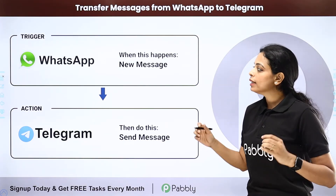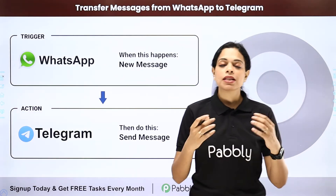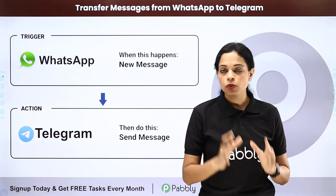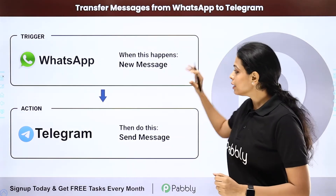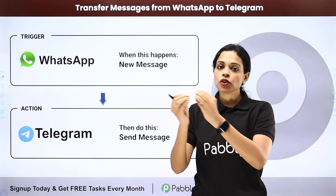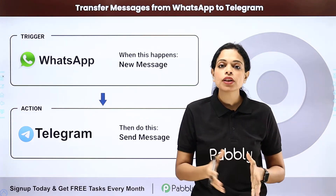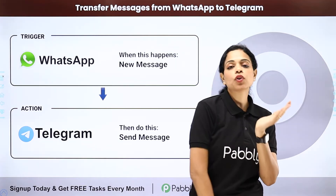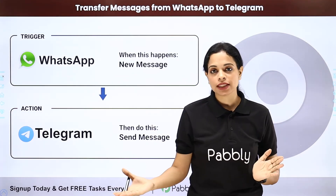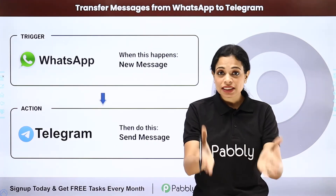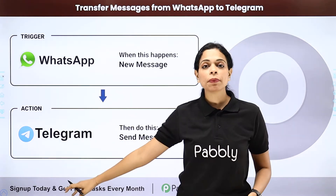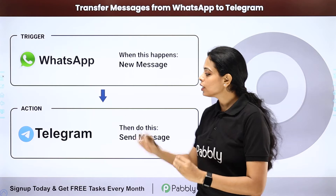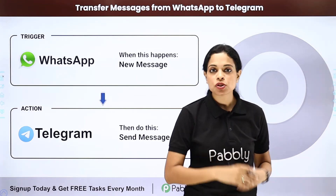Similarly, let's say that you have received messages on WhatsApp — all your clients' messages on WhatsApp — and now you want, since you have different numbers and different groups set on Telegram, those WhatsApp messages to be shared on Telegram. This can be done by integrating these two applications, where your trigger application would be WhatsApp and your action application would be Telegram.